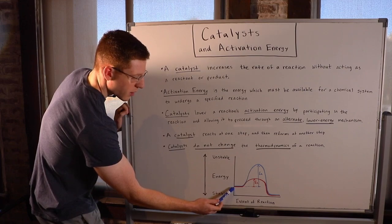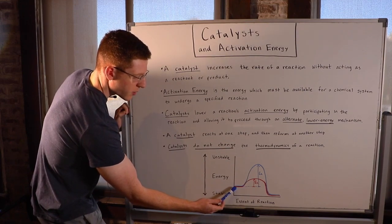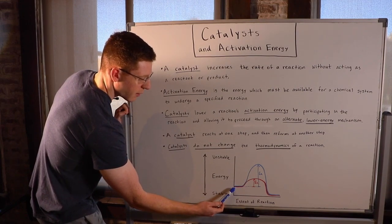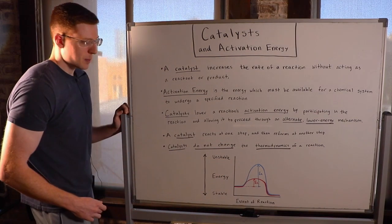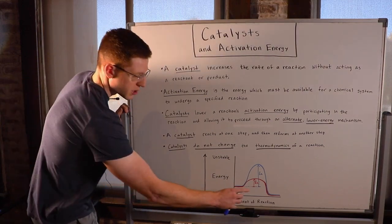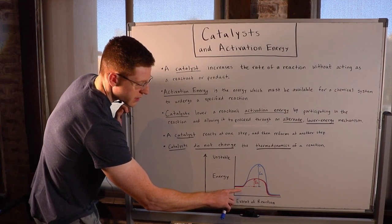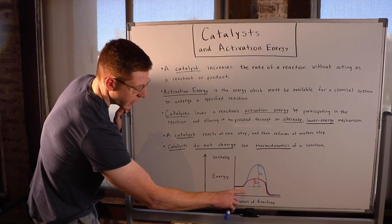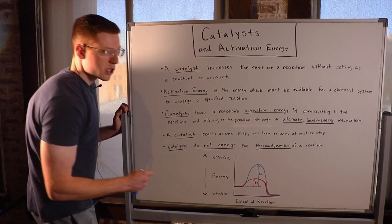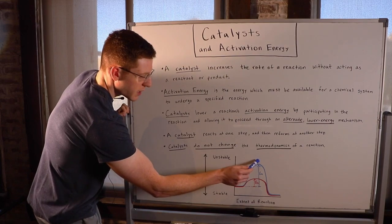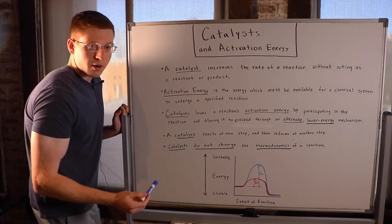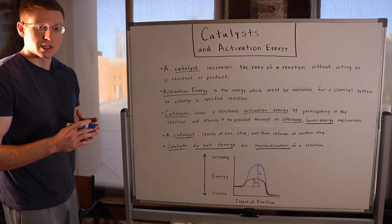So without a catalyst, the reaction looks like what it does in blue here. We start out with our reactants over here at this energy level. Then we have to overcome our activation energy. And you can see I've labeled the activation energy with EA. It's the difference between the energy of the reactants and the highest energy point of the reaction coordinate. Then once we achieve that activation energy, it's all downhill from there. The reaction pretty much proceeds spontaneously.